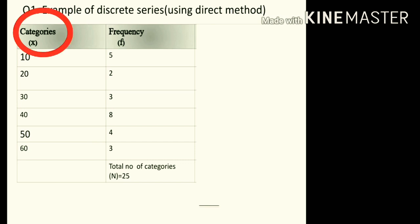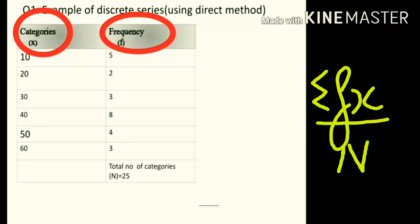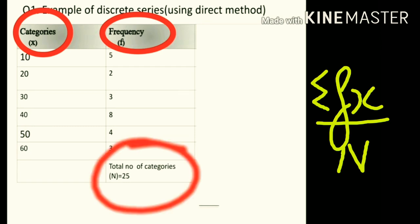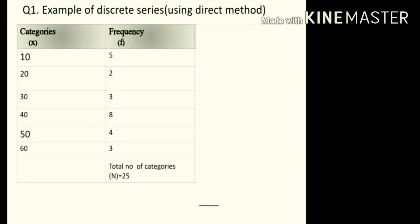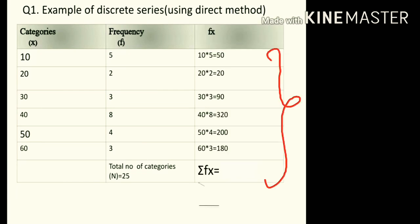Discrete series are given with categories plus frequencies — no classes are given in discrete series. Direct method is used to find mean. The formula for direct method is σfx upon n, where f belongs to frequency, x belongs to category, and n belongs to total number of frequencies. According to the formula, we need σfx. To obtain σfx, we multiply f into x: 10 into 5 is 50, 20 into 2 is 20, 30 into 3 is 90, 40 into 8 is 320, and so on.